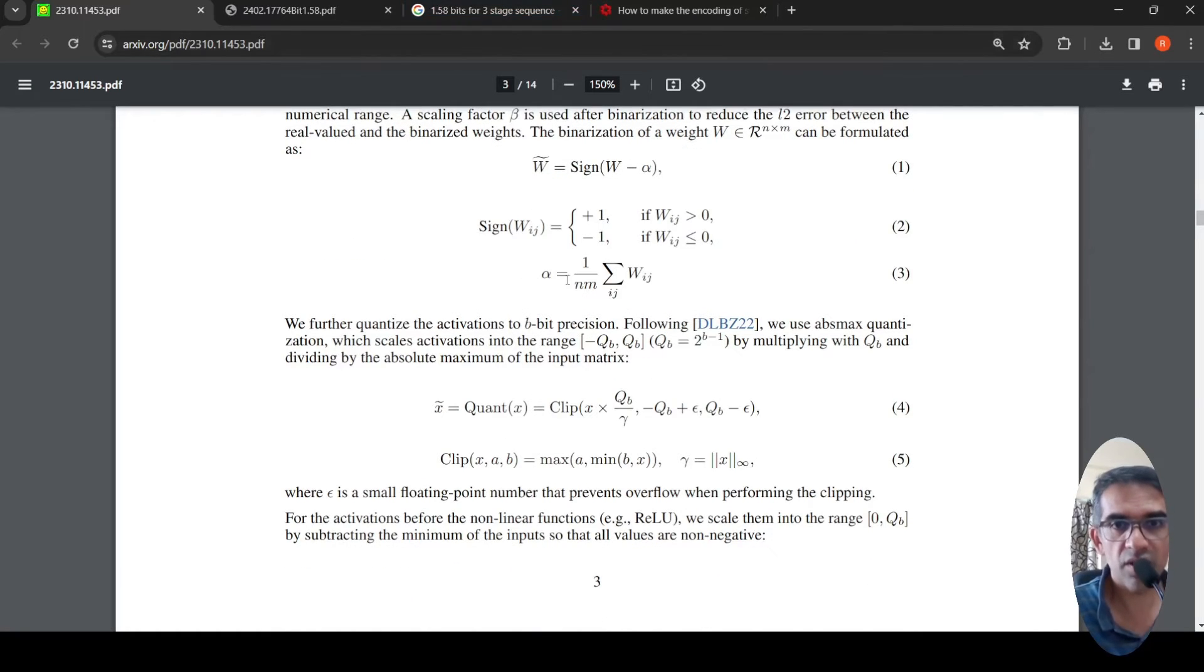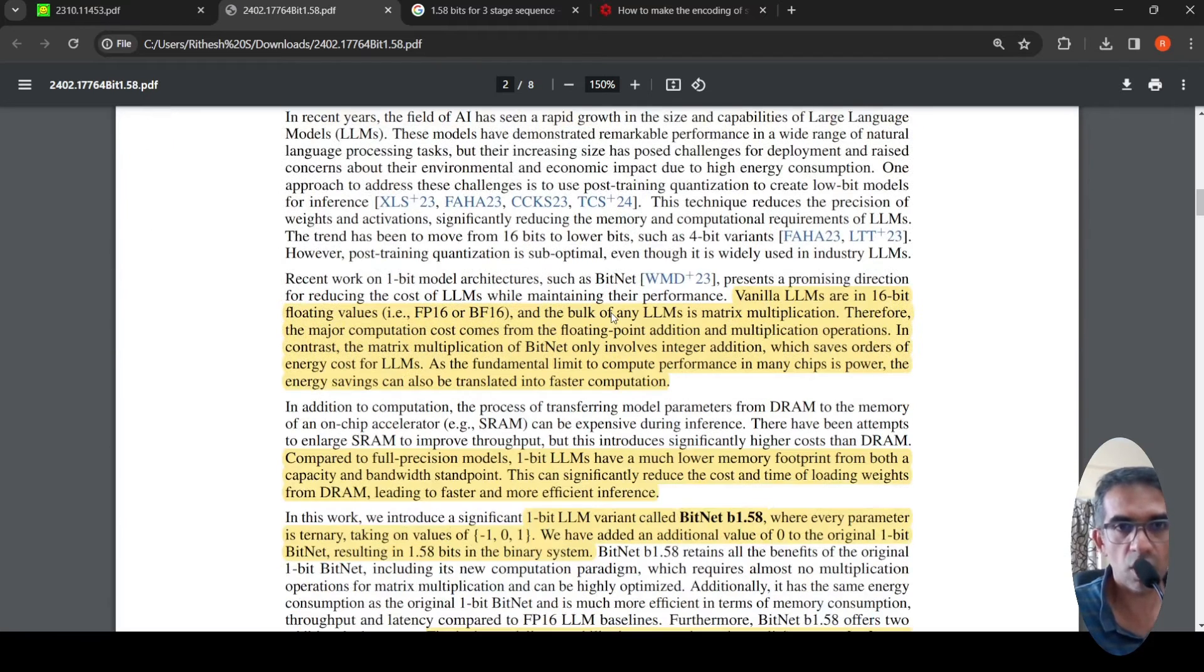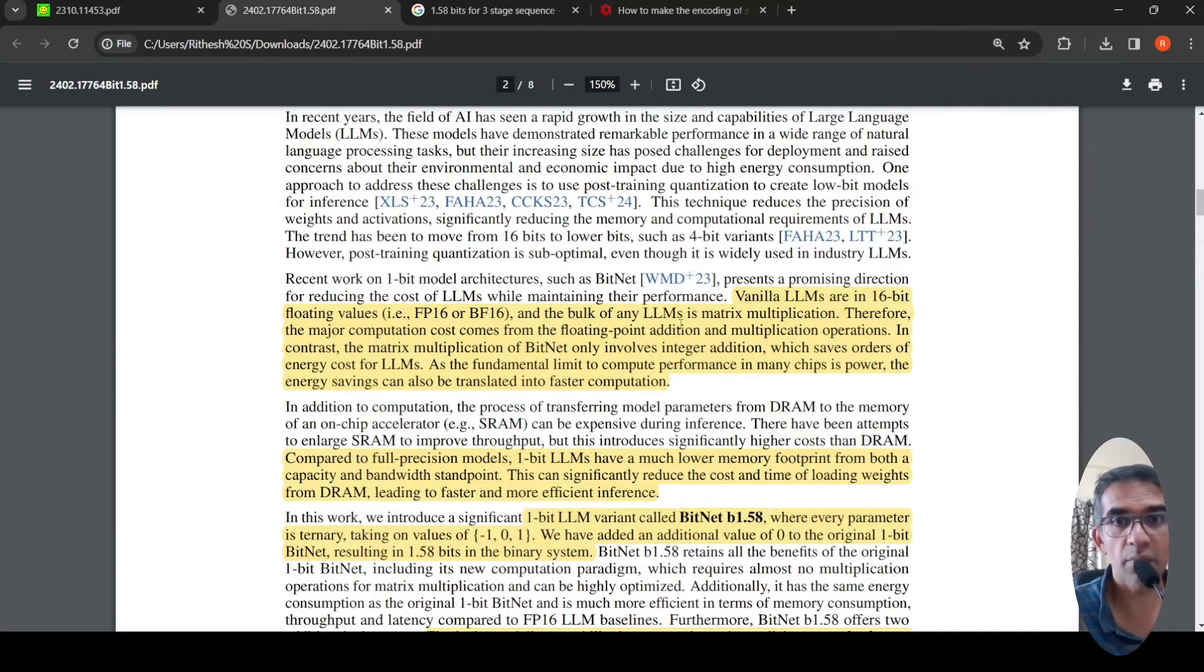So the change which they made in this particular paper is that they introduced another state zero over here in this architecture. Now, what are the benefits they could get over here? So vanilla LLMs or large language models are in 16 bit floating point values, the weights, and the bulk of any LLM is matrix multiplication. So the major computation costs from floating point addition and multiplication operations.